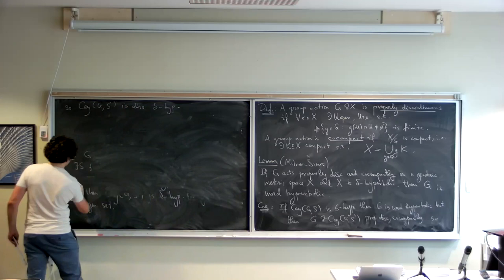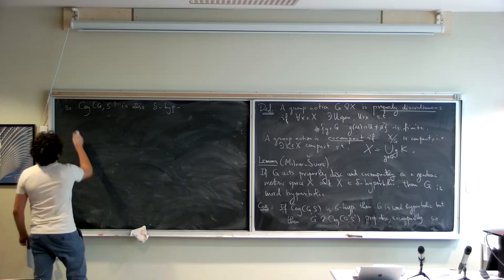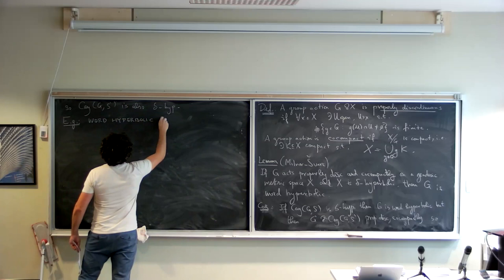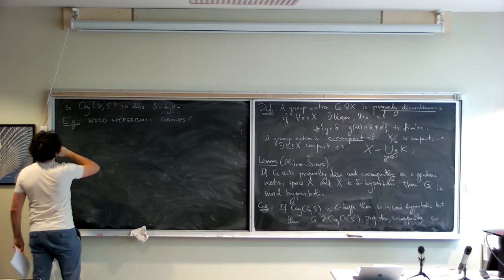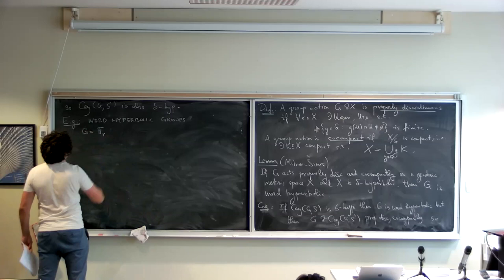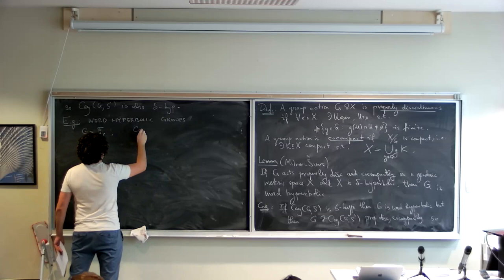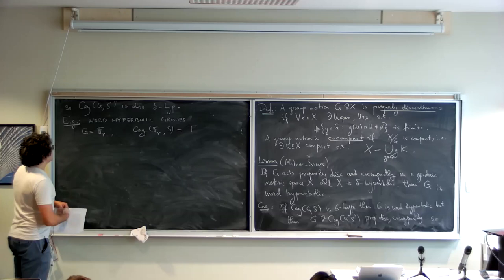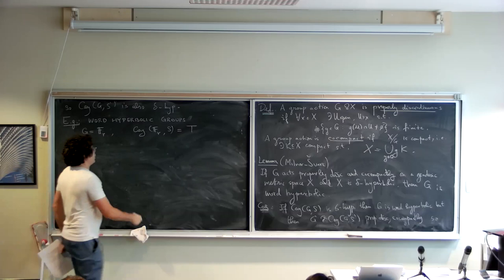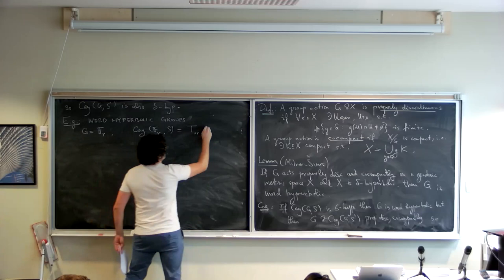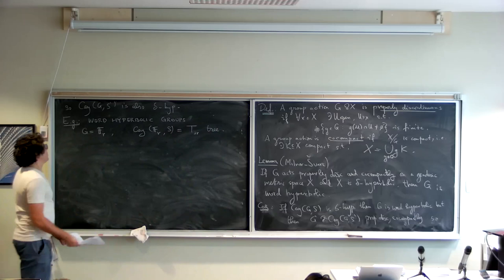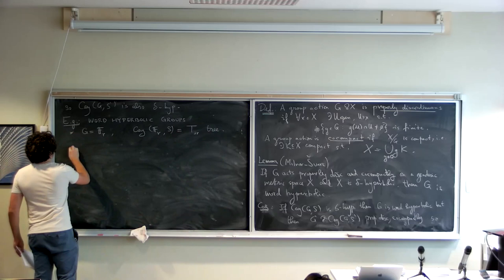What are examples of hyperbolic groups? The easiest examples of word hyperbolic groups: clearly we have G the free group in any number of generators — any rank — because the Cayley graph of the free group in r generators with respect to the standard generating set is a 2r-regular tree, which is zero-hyperbolic.